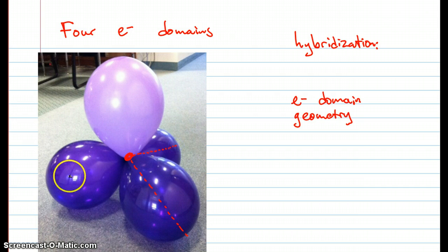I'll try to draw it, but the perspective is a little bit awkward. It turns out that each of these bond axes points perfectly towards the corners of a tetrahedron. So we call this electron domain geometry tetrahedral, and the type of hybridization that's present here is SP3.